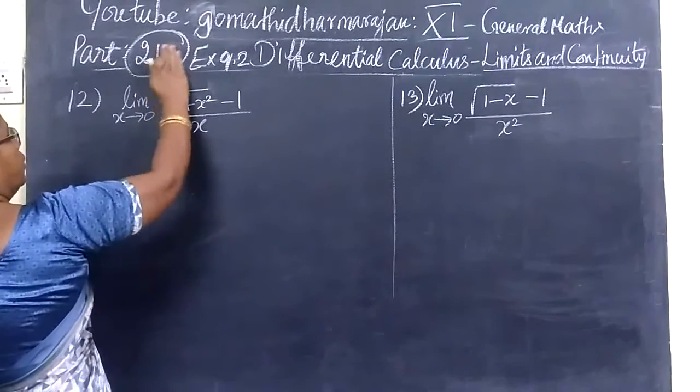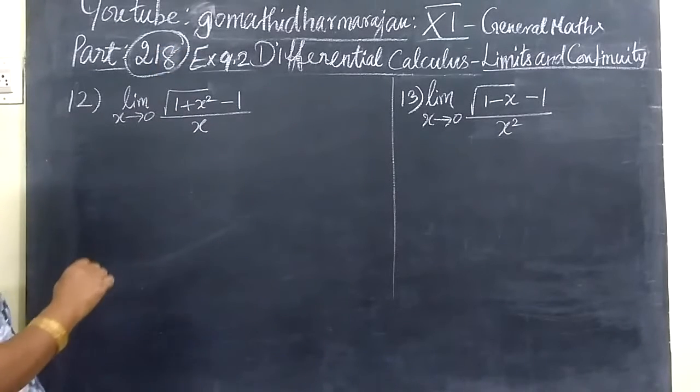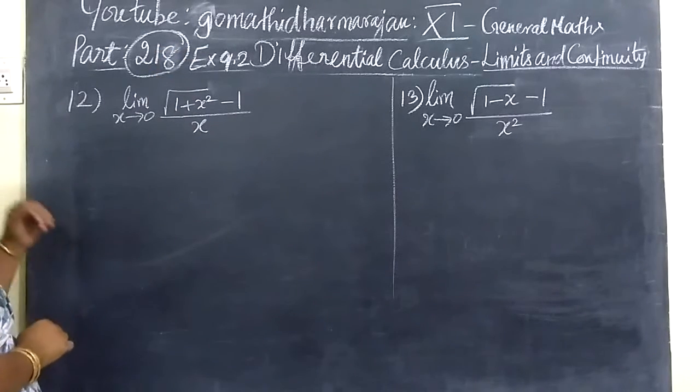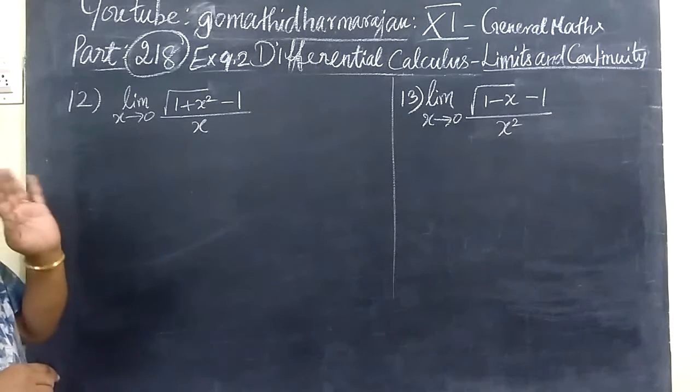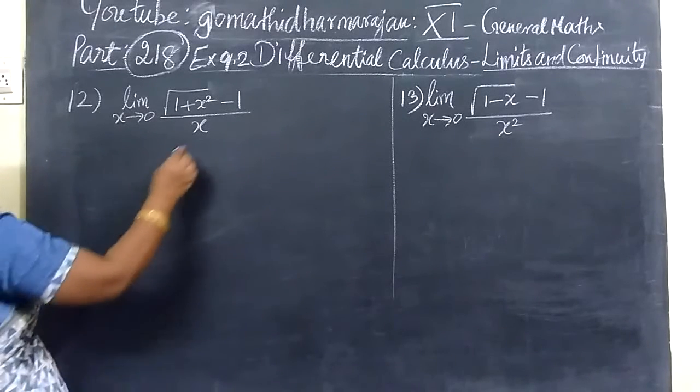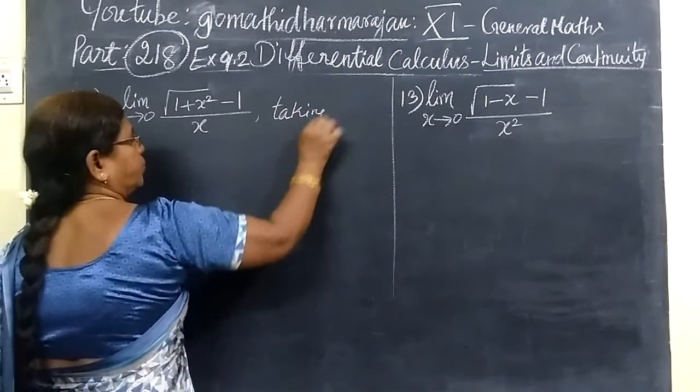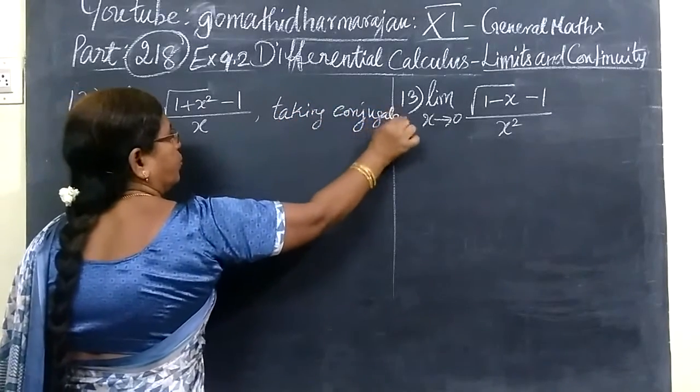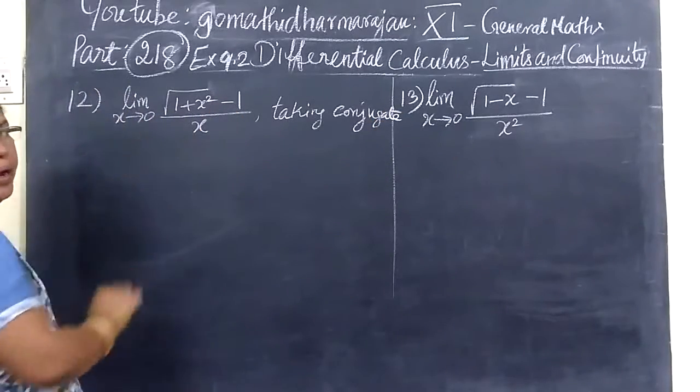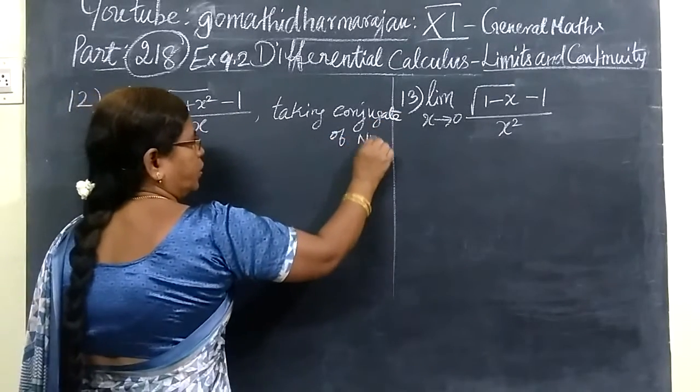I will ask you questions from the question paper. We will ask you questions. So, take the conjugate. I'll write the conjugate up in the numerator. This minus, then plus 1. Conjugate of the numerator.